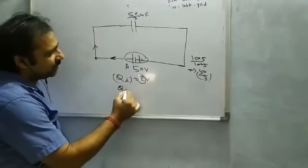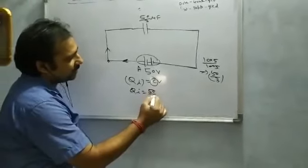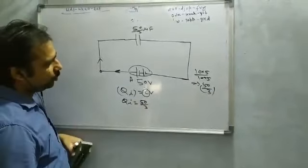Now how much charge will flow? C is 50 by 3 microfarad.